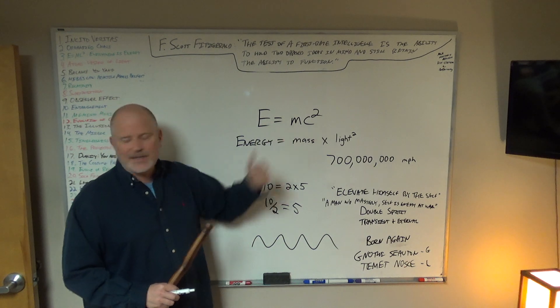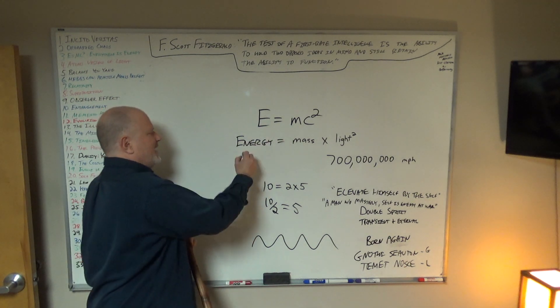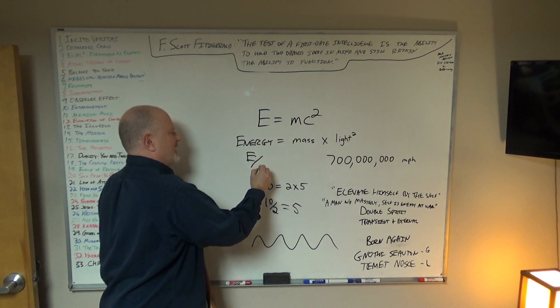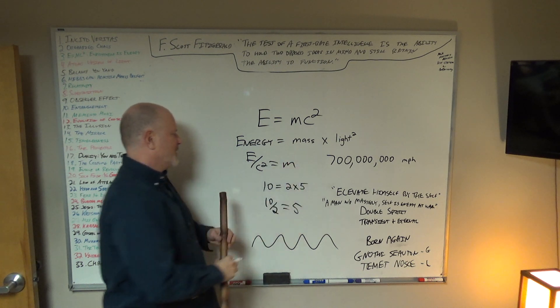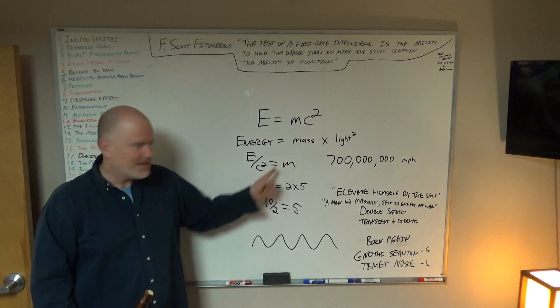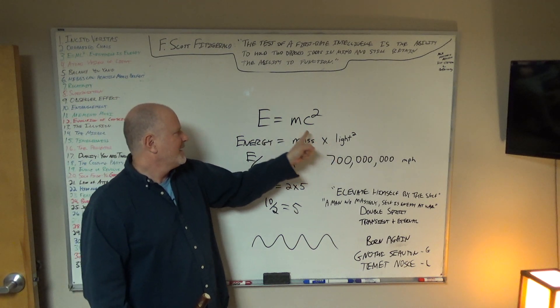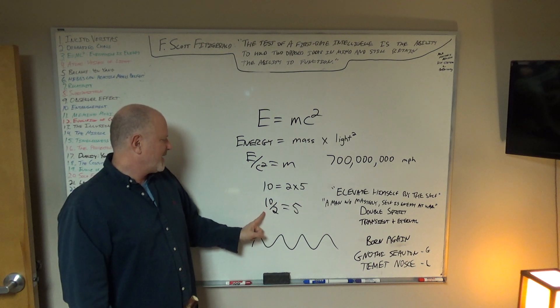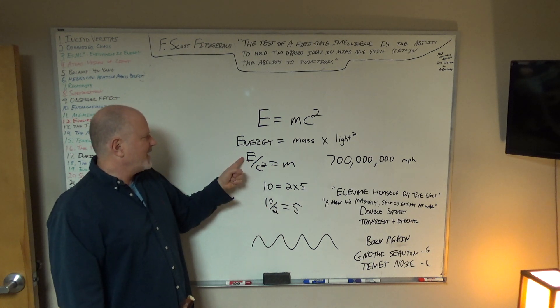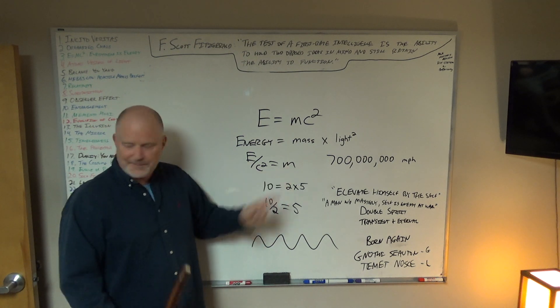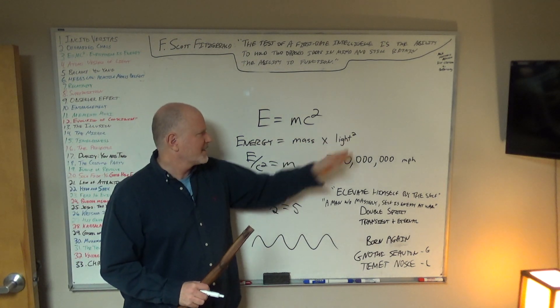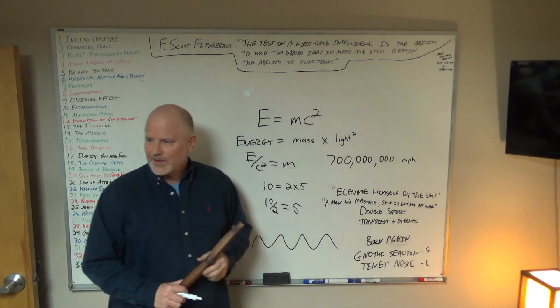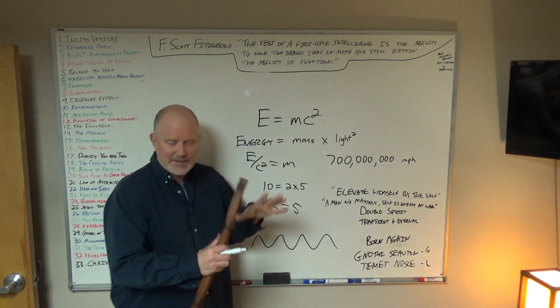So what if I did the same thing with E equals mc squared? So if I have E and I take the c squared and I put it under the E, E divided by c squared equals M. Using the same logic, that equation would be the same, because this is mass times light. I dropped the c squared underneath the E just like I dropped the 2 underneath the 10. 10 divided by 2 equals 5. So I can divide E, energy divided by c squared and I have M. So what is c squared? What is light squared? Light squared is 700 million miles per hour. It just means a really, really big fast number.